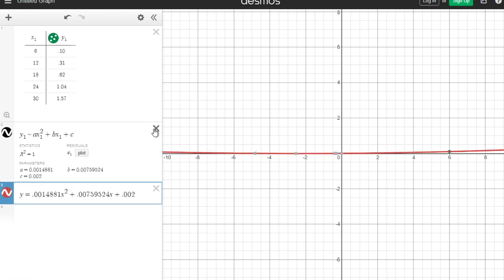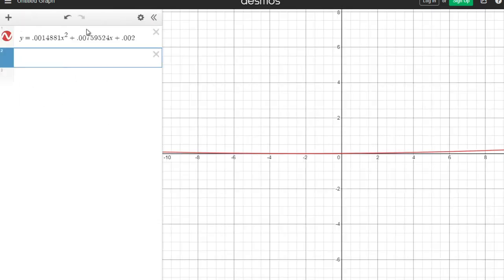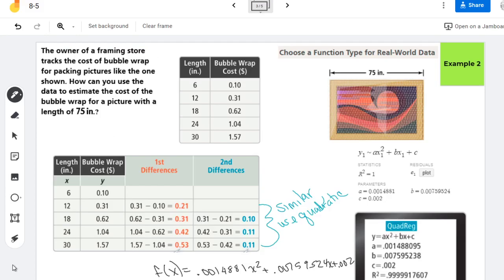Alright, so we can get rid of our table of values, we can get rid of our regression. Here's our function, and so we are trying to estimate the cost of a 75 inch picture. So all that I'm doing is I'm finding F of 75, or plugging 75 into the function.